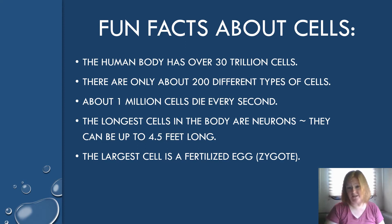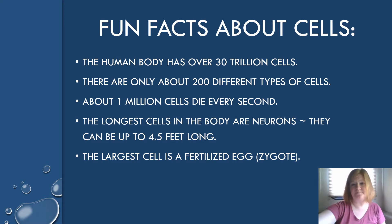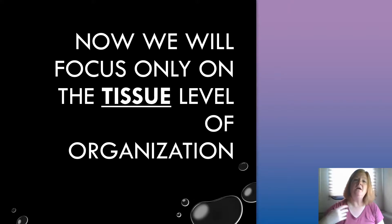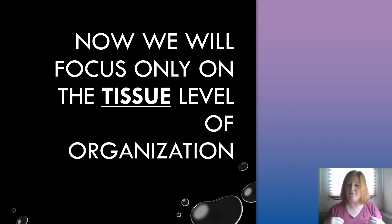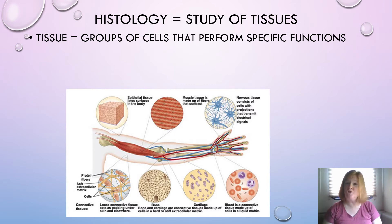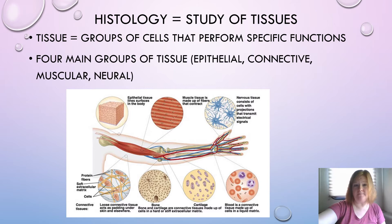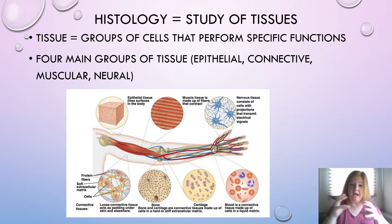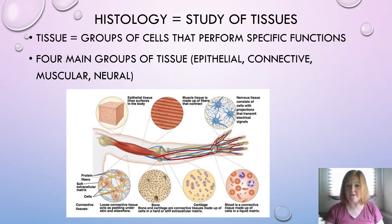The largest cell is the fertilized egg — a zygote — after it's been fertilized by a sperm. Now we'll focus only on the tissue level. Histology is the study of tissues. A tissue is a group of cells that work together to perform a specific function. There are four main groups of tissue — epithelial, connective, muscular, and neural — and those four groups work together to form different organs with different functions.